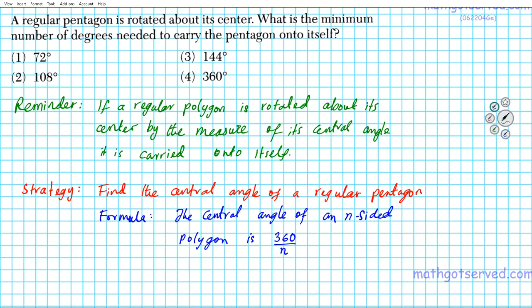So for a pentagon, how many sides does a pentagon have? A pentagon has 5 sides. So for a pentagon, n is equal to 5.